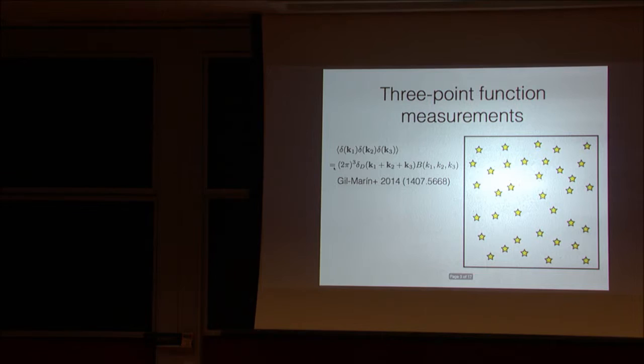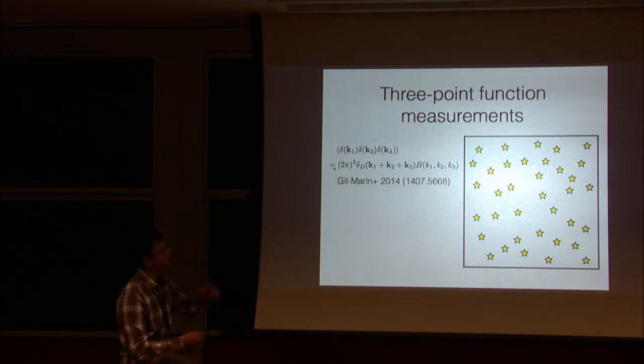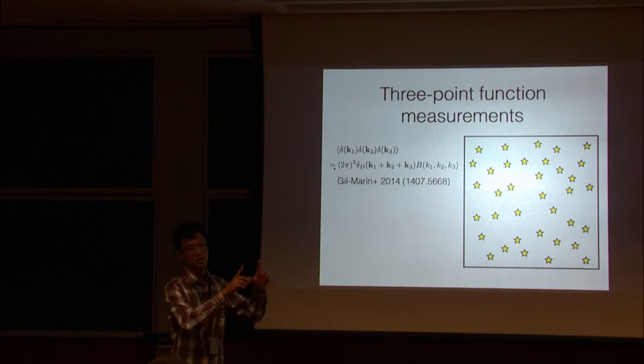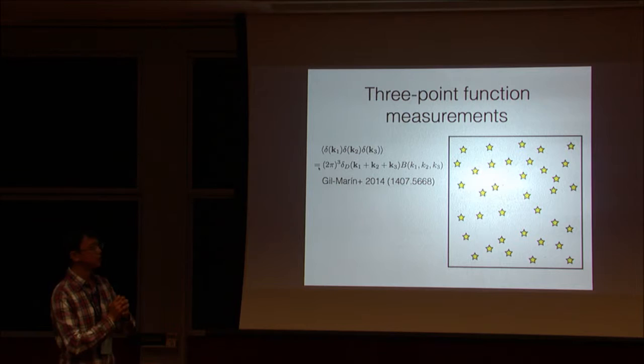So let me quickly go over the measurement of the three point function. So you can imagine you have a box of survey or simulation, you have galaxy or halos inside. And for full bispectrum measurement you just construct density field and then you take ensemble average of three of them. So what you do practically is just count the triangles of your density field. And for the bispectrum measurement the result I will quote today is mainly from the paper by Hector Gilmarine et al. So they measure the bispectrum of both DR11 CMASS samples.